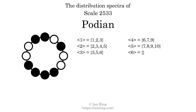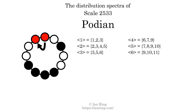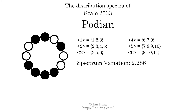The generic interval of six scale steps comes in three different specific interval sizes: nine semitones, ten semitones, and eleven semitones. The spectrum width of this generic interval is two. The spectrum variation is the sum of all the widths, divided by the number of tones. The spectrum variation of this scale is 2.286. Since the variation is greater than zero, this indicates that the scale is not perfectly even. The highest spectrum width is 3. Since this is greater than 1, we know that this scale is not maximally even.